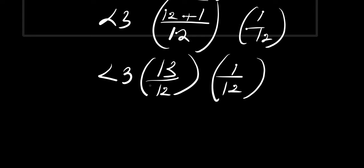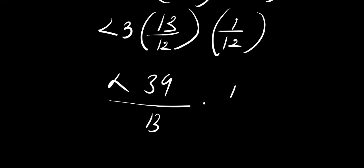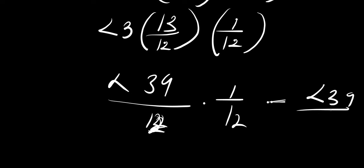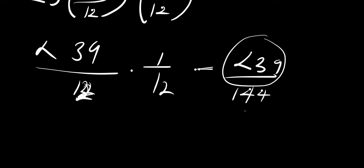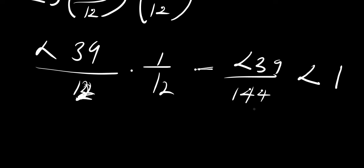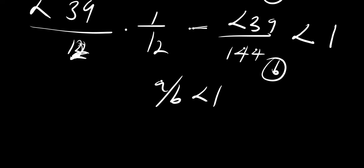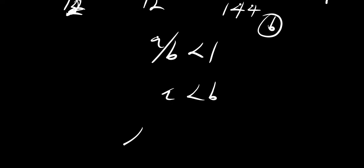Multiplying this out: 3 times 13 is 39, so we have less than 39/12 times 1/12, which equals less than 39/144. Now, 39 divided by 144 is a number less than 1 because the numerator is smaller than the denominator. So a divided by b is less than 1, which means a is less than b.